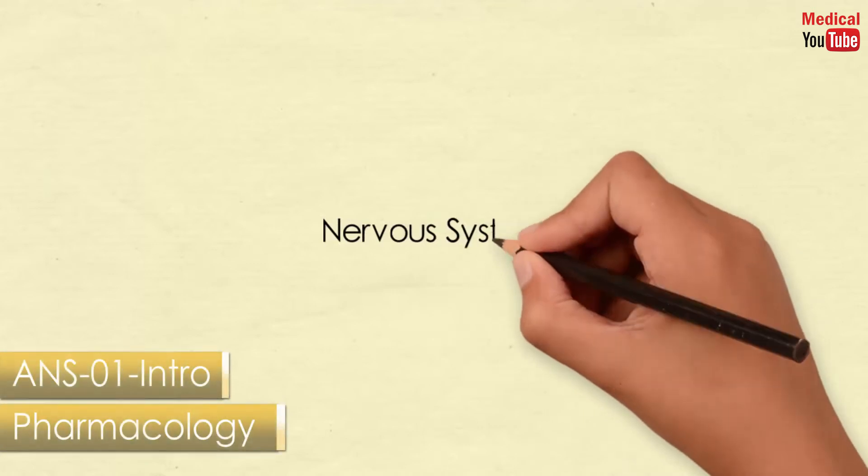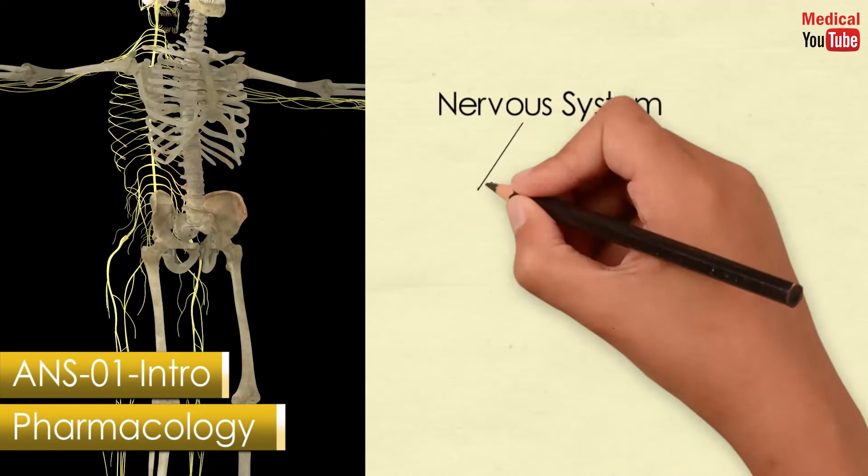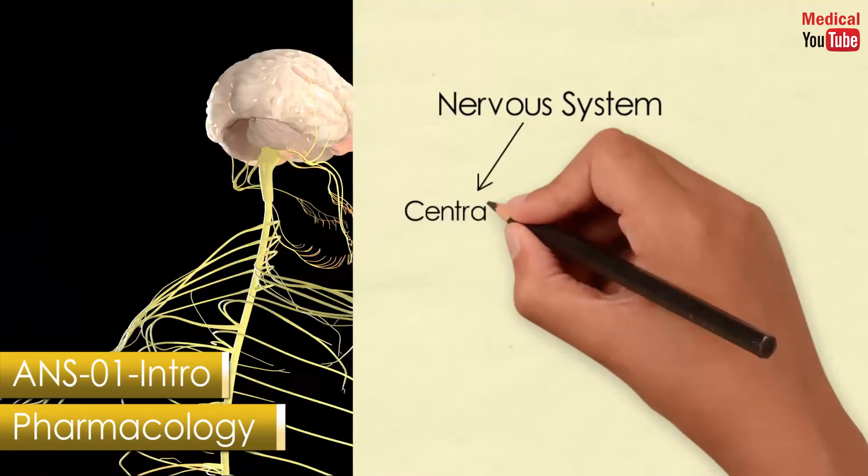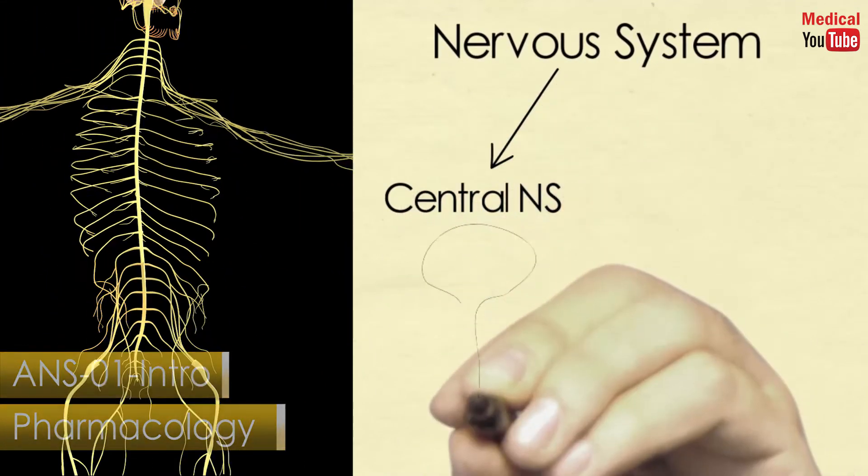The nervous system is divided into two anatomical divisions. The central nervous system, which is composed of the brain and spinal cord.